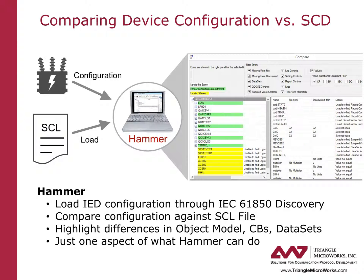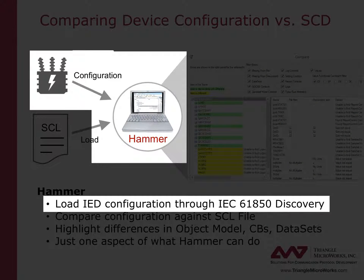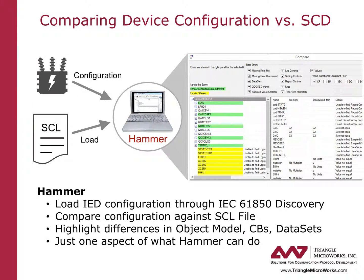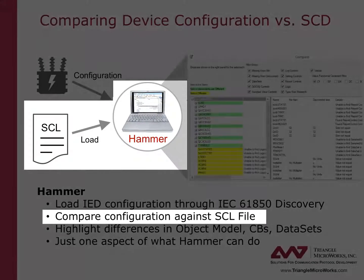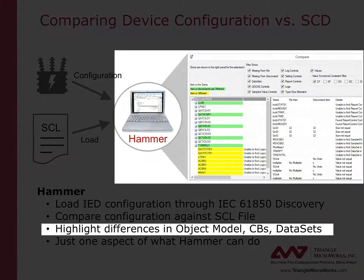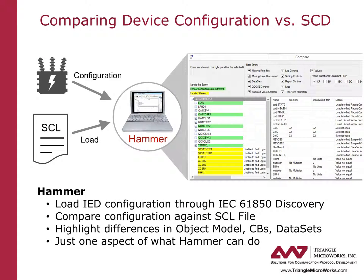One feature of the Hammer tool in the IEC-61850 test suite is the ability to compare the configuration of the device with an SCD file. Hammer can load the configuration of a server device through the IEC-61850 discovery service. The user can then compare this against one of the IEDs in the SCD file. Hammer then highlights the differences in the two, including the object model, control blocks, and data sets. This helps users identify potential areas where a device is not being configured as defined in the SCD file.